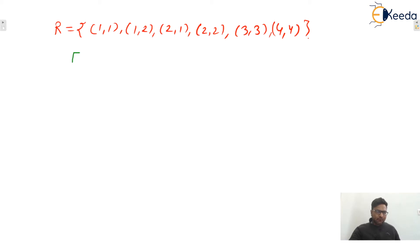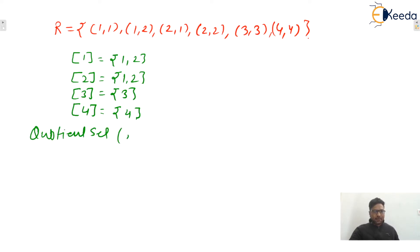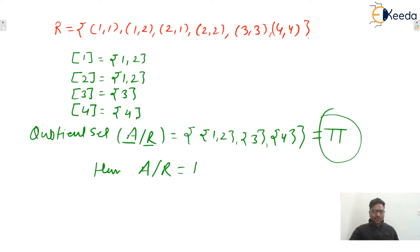Now, the relation R is {(1,1),(1,2),(2,1),(2,2),(3,3),(4,4)}. Finding the quotient set: the equivalence class of 1 is {1,2}, equivalence class of 2 is {1,2}, equivalence class of 3 is {3}, and equivalence class of 4 is {4}. So the quotient set A/R equals exactly the partition pi. Hence the theorem is verified.